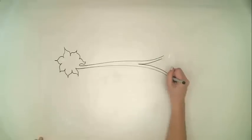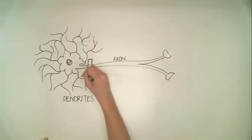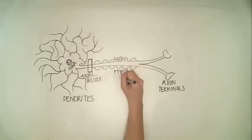Neurons communicate by passing an electrical signal by the movement of ions flowing in and out of the cell. First, electrical signals are transmitted from the dendrites to the cell membrane where they meet the axon hillock.